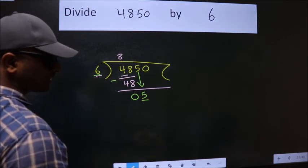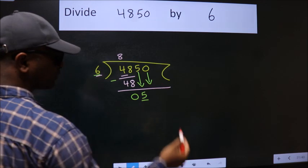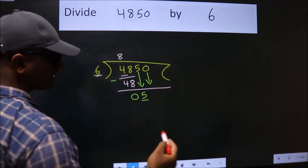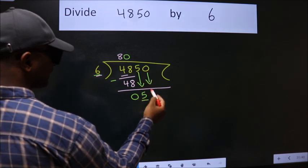So, we should bring down the second number. And the rule to bring down the second number is, put 0 here. Then only we can bring down this number.